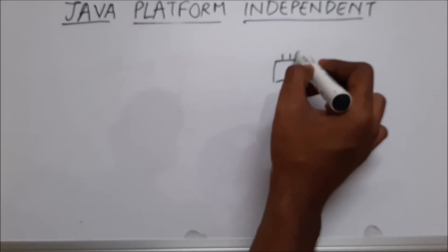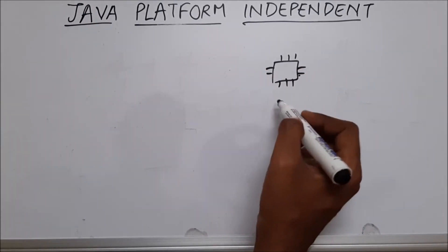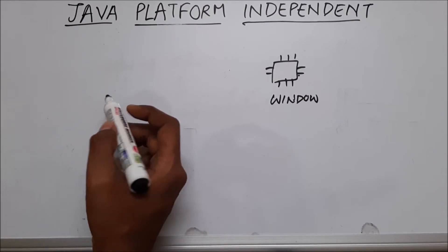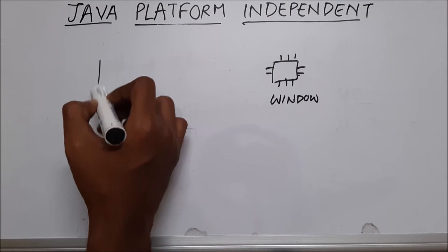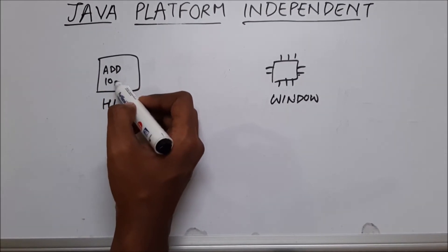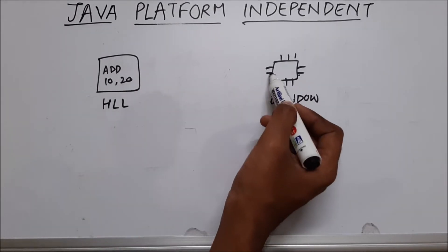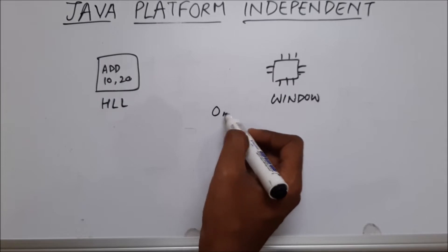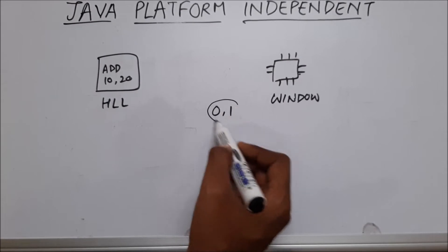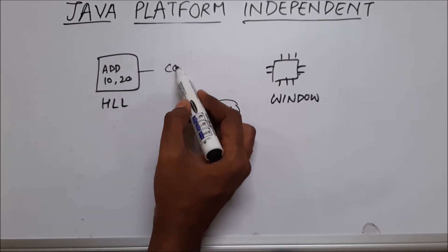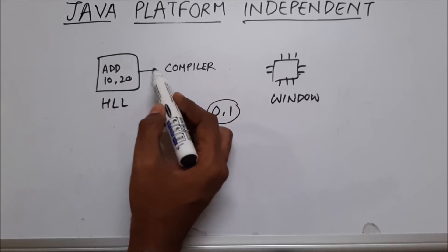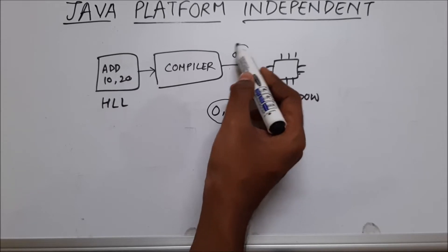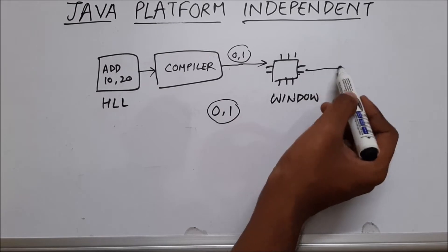Let's say this is a microprocessor — a Windows system. When we write a program in high level language, for example adding 10 and 20, our processor cannot understand it. Our processor can understand only zeros and ones. So we need to convert this high level language into zeros and ones using a software called compiler. This compiler converts high level language into zeros and ones, which our processor can understand to give us an output.